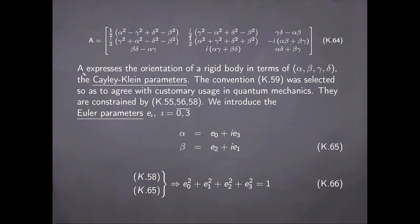So this matrix expresses the orientation of a rigid body in terms of the coordinates alpha, beta, gamma, and delta, which are the Cayley-Klein parameters. The convention of equation 59 for the structure of P that was chosen here was selected so as to agree with customary usage in quantum mechanics. Otherwise, there are other alternative ways in which the matrix can be set up.